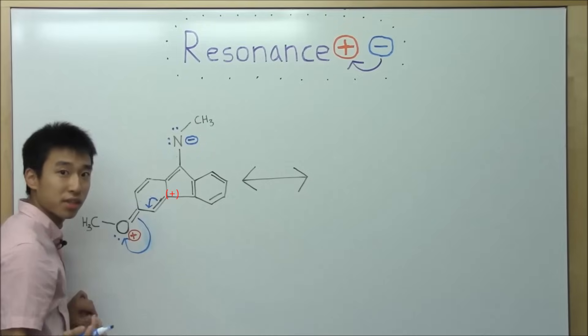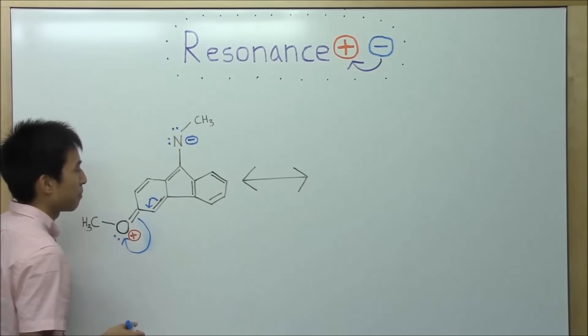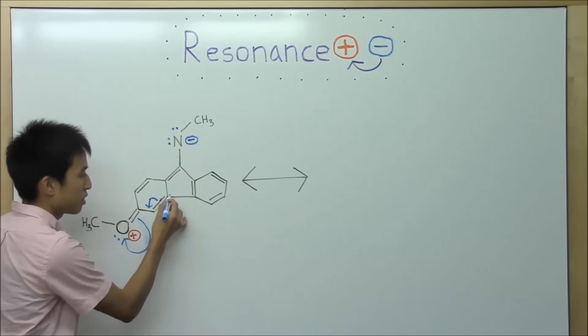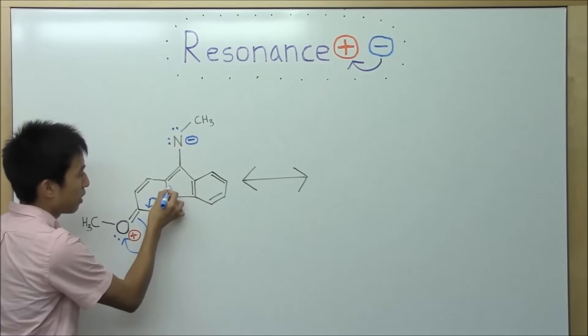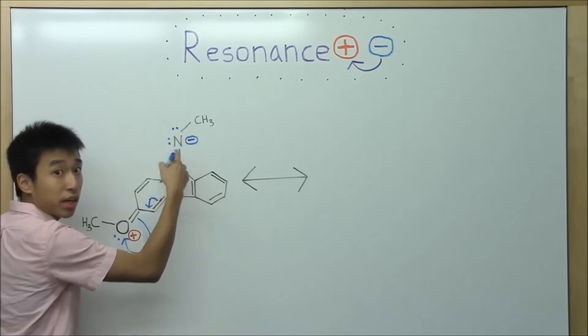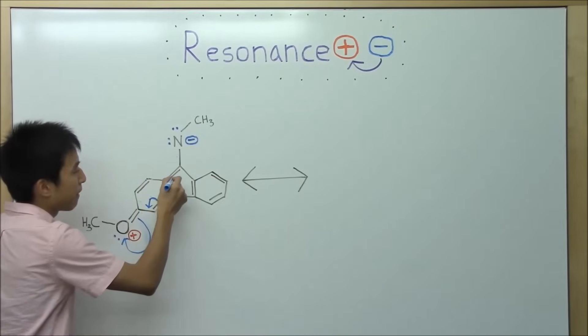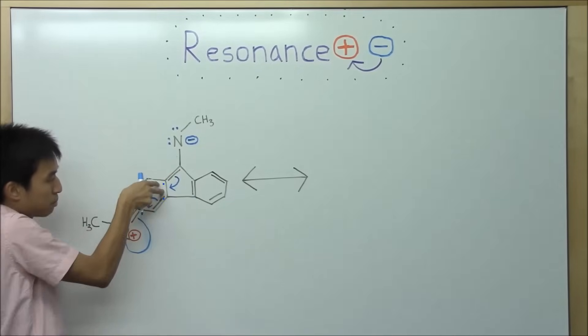So then ask yourself again, where are we going to get electrons to fill in the gap? Let's see. So we can technically, let's see, so if there's a positive charge that forms here, we could shift this over, or we could shift this over as well. But since the negative charge is up here, and that's the area with excess electron, let's try and pull electrons from up there. And so we can just do this. Shift the two electrons down like that. Boom.